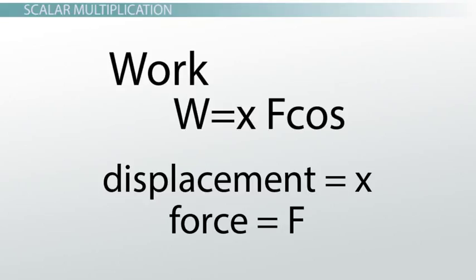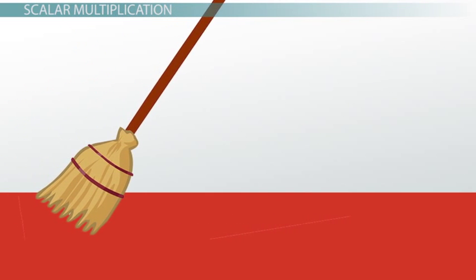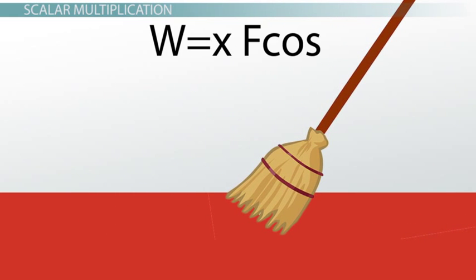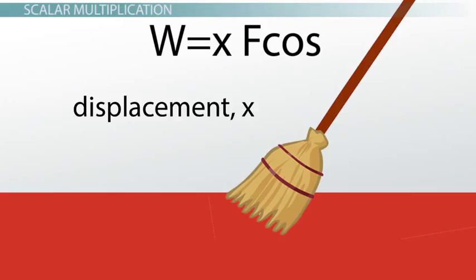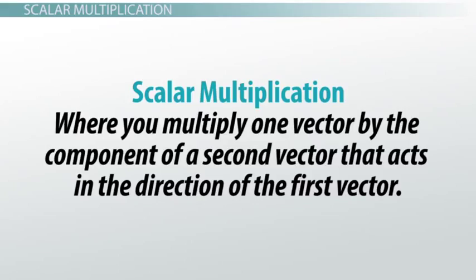Both displacement and force are vectors. But if the force was applied at an angle — say by pushing diagonally down on a broom as it skirts across the floor — we can make the definition of work more specific. Work is equal to the displacement multiplied by the component of the force that acts in the direction of motion. If you're pushing the broom down at an angle, it's only the part of the force that points along the floor that we're interested in. Whenever that is the case, we're doing scalar multiplication — completing a dot product.